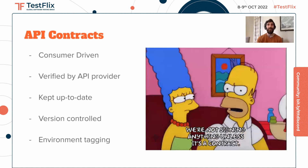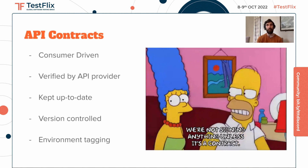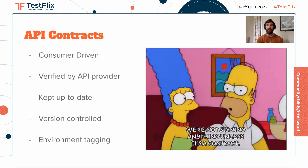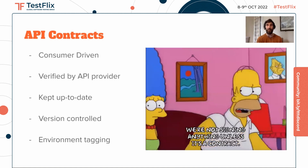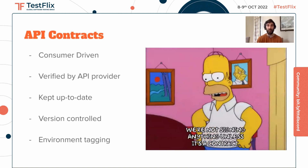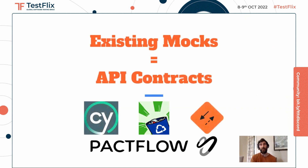This is where API contracts come in. They're consumer-driven, so we're using a lifelike scenario based on how the service will be consumed by the web app or mobile app. They're verified by the API provider, so we can have confidence the service is operating as we expect. They're kept up to date because the contract tests live right next to the code. They're version controlled, so we can point to a specific version on an environment like production. And now with bi-directional contract testing provided by PactFlow, we can use our existing mocks — reusing Cypress and Mock Service Worker fixtures — without creating new API tests or additional code.